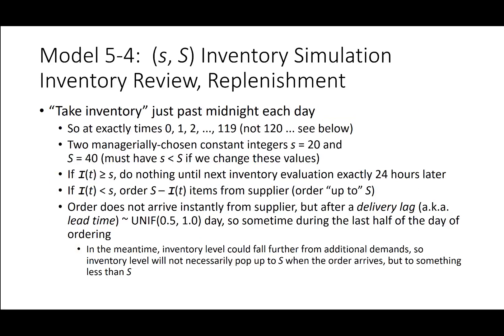Inventory is evaluated just past midnight each day at times 0, 1, 2, up to 119. Two managerial constants are s = 20 and S = 40. If inventory is greater than s, do nothing until the next evaluation one day later. If less than s, order up to S — order quantity equals S minus current inventory. If the order does not arrive instantly, the delivery lag follows a uniform distribution sometime during the last half of the day. Orders placed at 600 minutes change max calls to 1 — this is common in real-world inventory fulfillment.